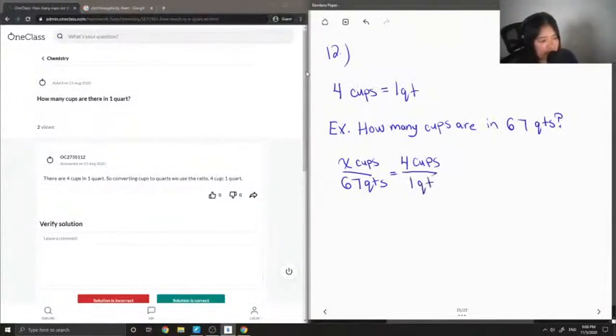And now I just have to multiply both sides by 67 quarts to solve for x. So basically, this is the same thing as 4 times 67, which is 268 cups.